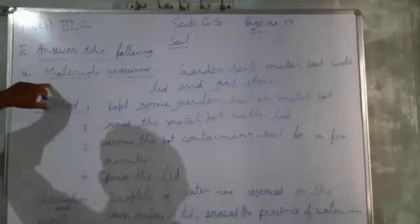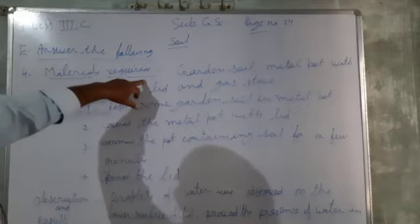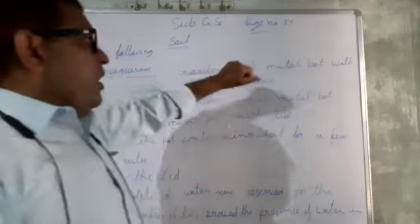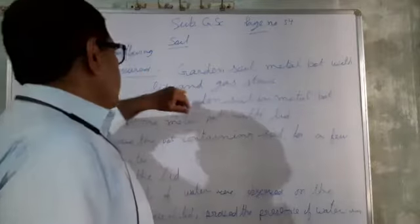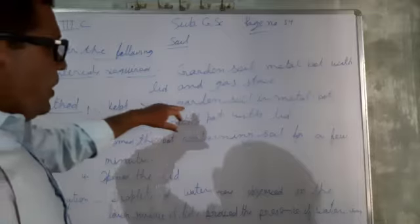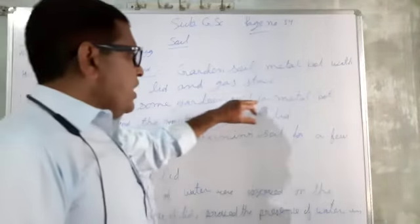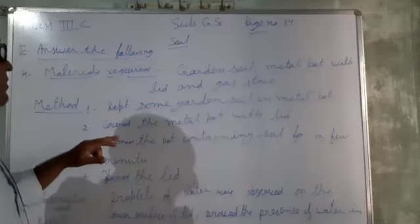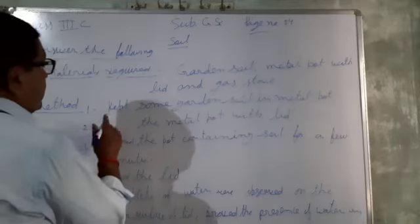Activity: soil contains water. Materials required: garden soil, metal pot with lid, and the gas stove.